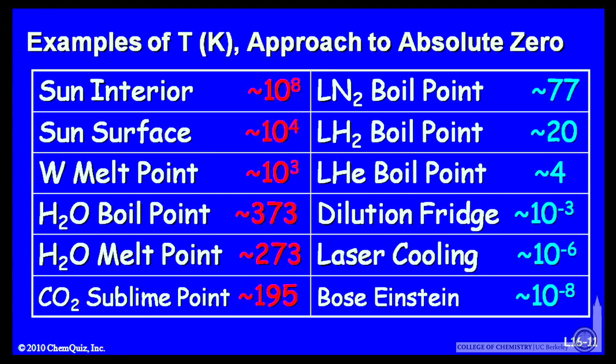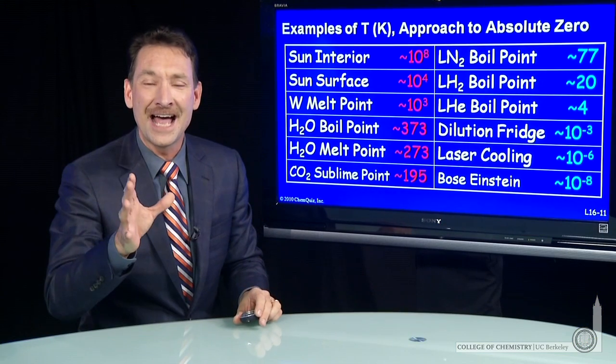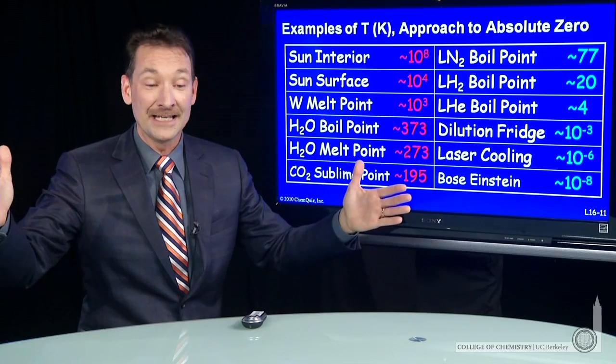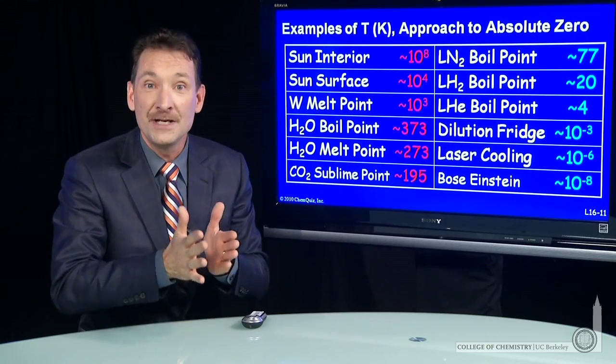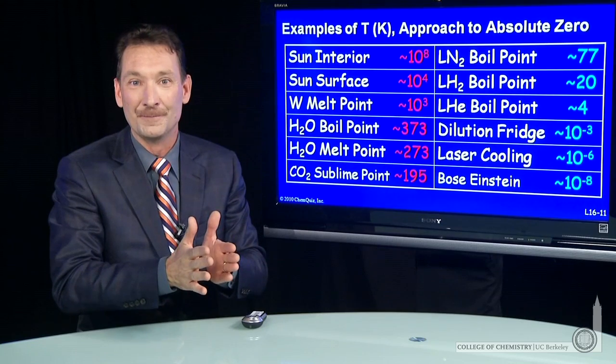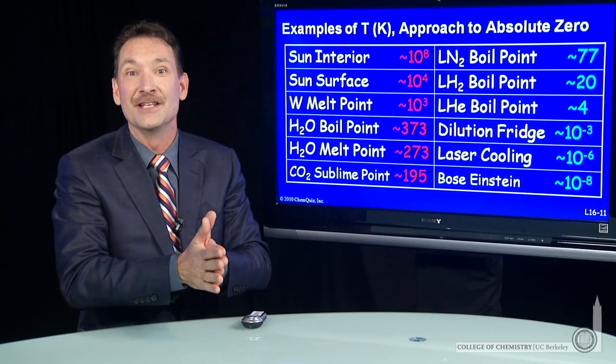The boiling point of liquid hydrogen, the boiling point of liquid helium, both listed here, 4 degrees Kelvin for liquid helium. That's a very ideal gas. That is, it behaves ideally. It stays a gas all the way down to 4 degrees above absolute zero, and then condenses into a liquid.